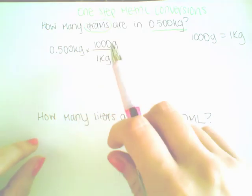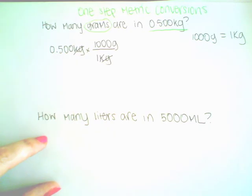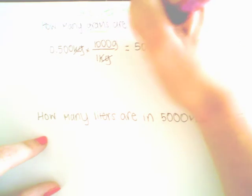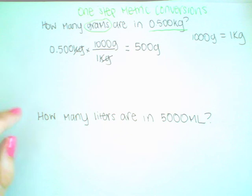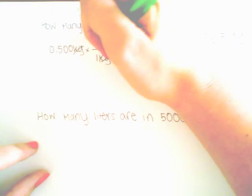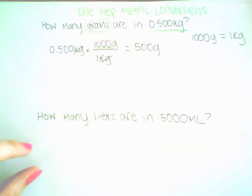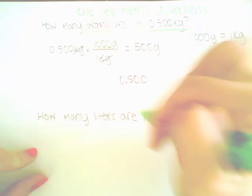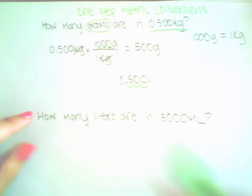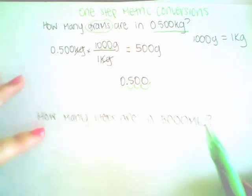You multiply the numbers on the top and divide by the numbers on the bottom, so kilograms will cancel out. .500 times one thousand divided by one gives you five hundred grams. A little trick: when we are multiplying, numbers get larger. If we are multiplying by a thousand, we count how many zeros — that's three zeros — so the decimal is going to move three places to the right. In other words, it gets three places larger.